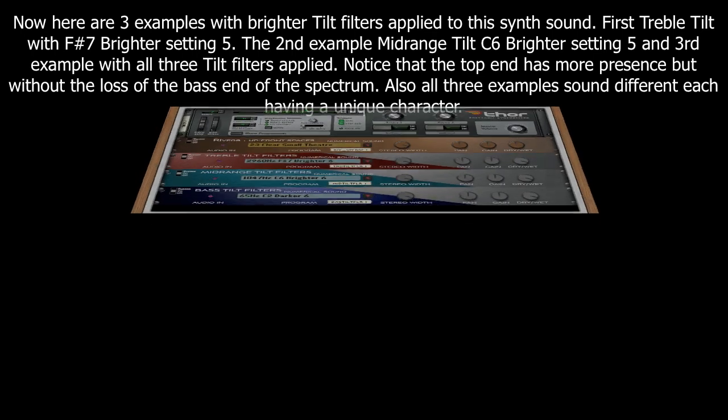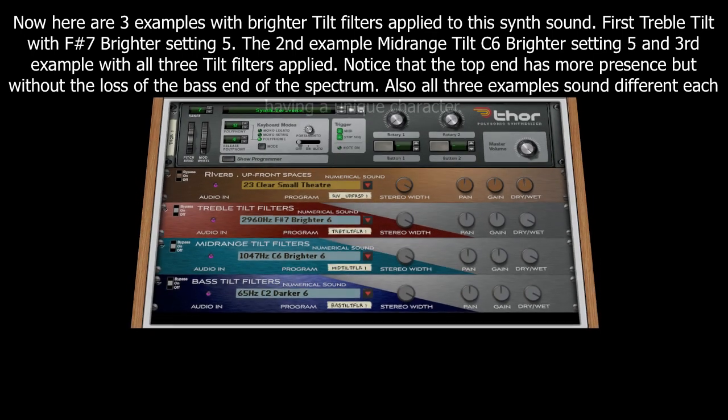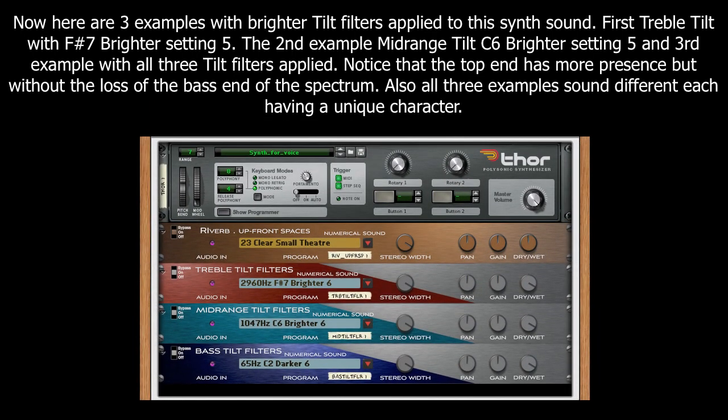Here are three examples with brighter tilt filters applied to this synth sound. First, a treble tilt filter with F-sharp 7, brighter setting 5. The second example: mid-range tilt filter C6, brighter setting 5. And the third example with all three tilt filters applied. Notice that the top end has more presence, but without the loss of the bass end of the spectrum. All three examples sound different, each having a unique character.